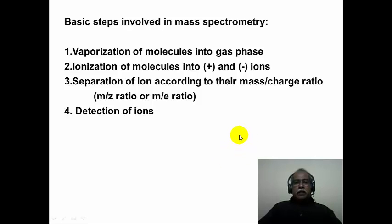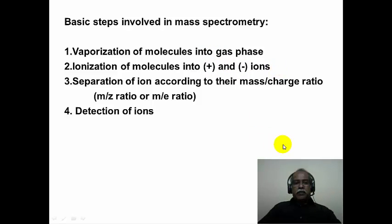The basic steps involved in mass spectrometry are as follows. The sample is vaporized and brought into the gas phase. Ionization of molecules into positively or negatively charged ions is the next step — mass spectrometry is essentially about ions produced in the gas phase and the chemistry of those gas-phase ions. Then, separation of ions according to their mass-to-charge ratio takes place in the mass analyzer. The mass-to-charge ratio is expressed as m/z in modern usage, or m/e in older textbooks.